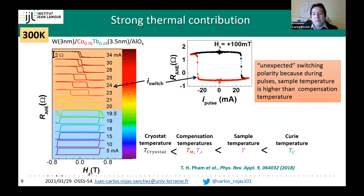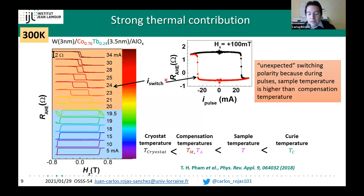With this result, it was clear that the unexpected switching polarity occurs because we started the experiment at the cryo-stop temperature but the actual device temperature during switching is above the magnetic compensation temperature. We know the sample temperature is above both the magnetic and angular compensation temperatures, and below the Curie temperature, since the sample is still magnetic with perpendicular anisotropy. This is our first key finding.